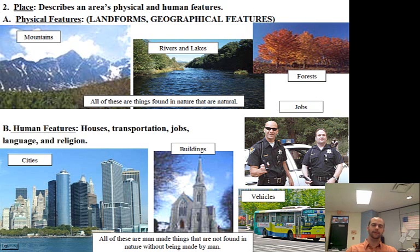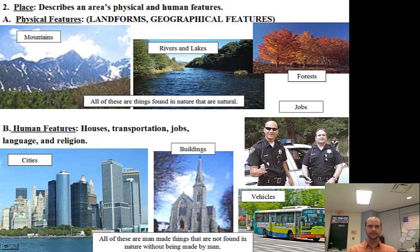We have out west the Rocky Mountains. We have the Appalachian Mountains here on the East Coast, and there are the Great Plains. A plain is a landform — a physical feature. Some rivers and lakes in our country are the Mississippi, the Hudson, and the Mohawk. Physical features describe and define a place.